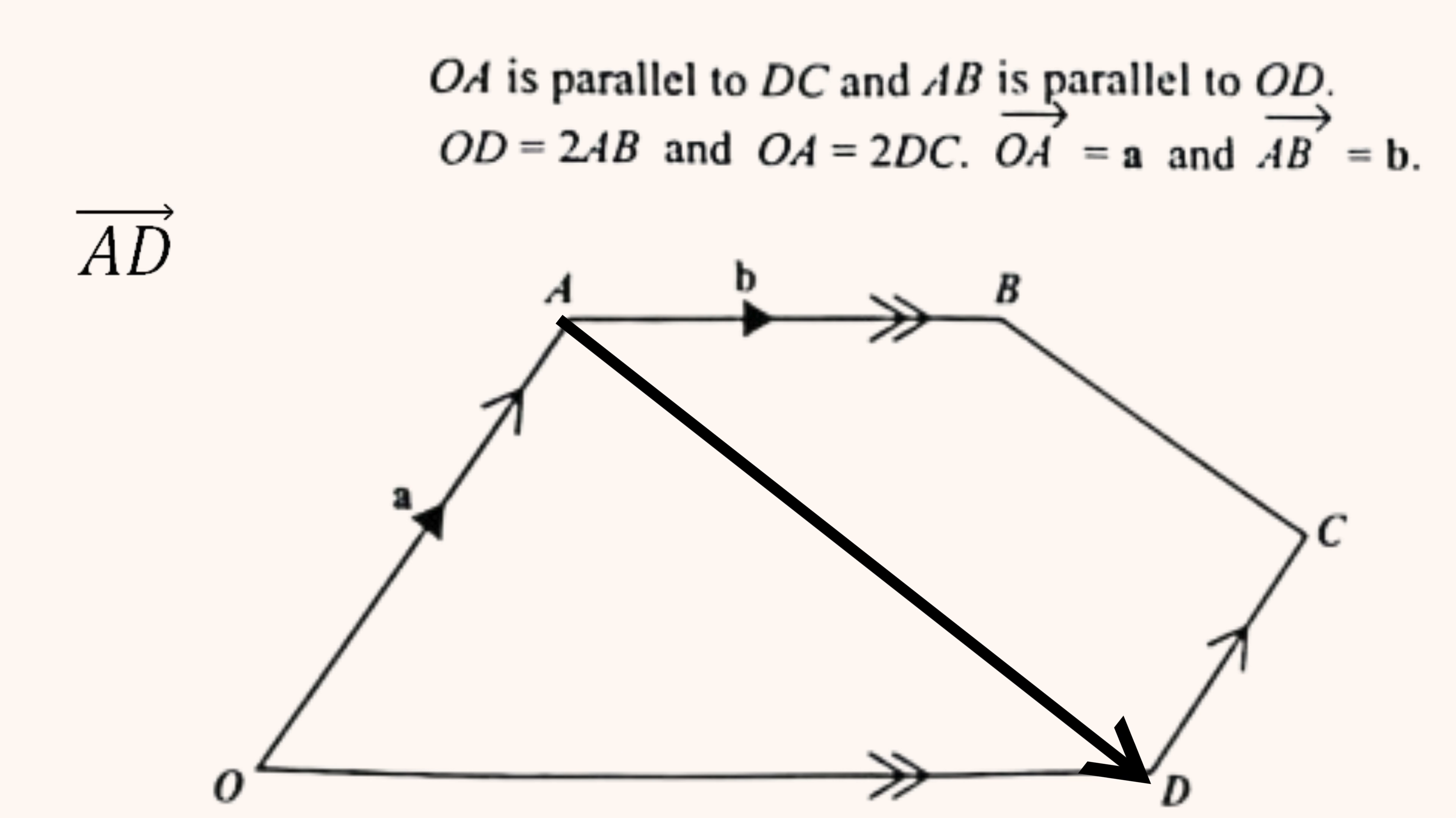We will apply the triangle law to get the vector AD. To get from point A to point D, we can go from A to O and then from O to D. This gives us the vector equation AD equals AO plus OD. The vector OA is a. Vector AO would indicate a change of direction, hence a change of sign. That means the vector AO is minus a.